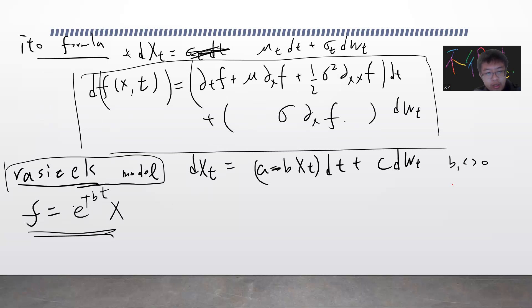So f is this, the derivative with respect to t is b e^(bt)X, ∂x f is e^(bt), second derivative is zero. The μ is a - bX and the σ is c.